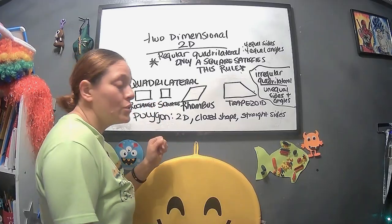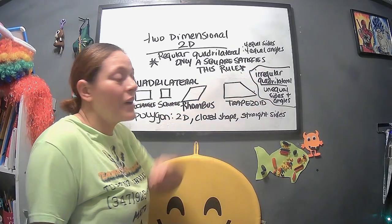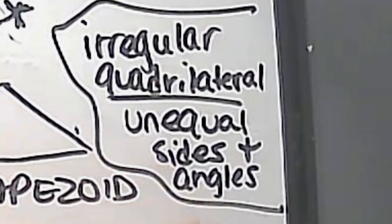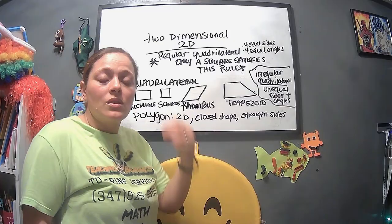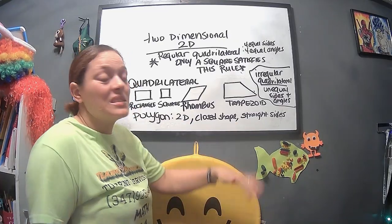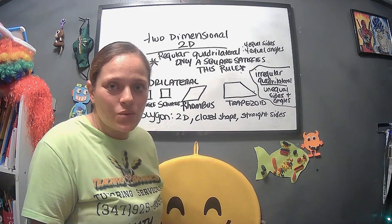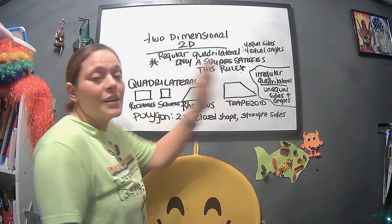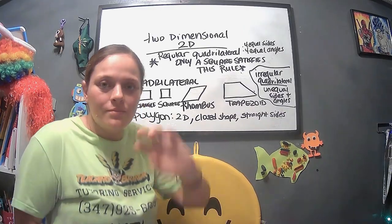But I do want to mention the irregular quadrilateral because it's the opposite. It's the unequal side and unequal angles. The reason it's important to know this is because in case they do decide to switch the question around and make it irregular. So now you know regular, irregular. All that is done.